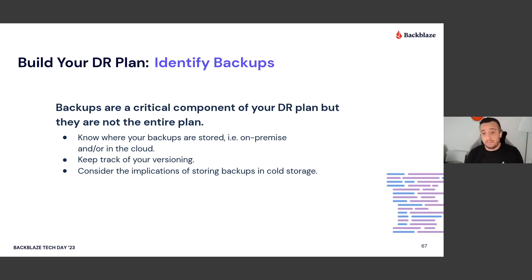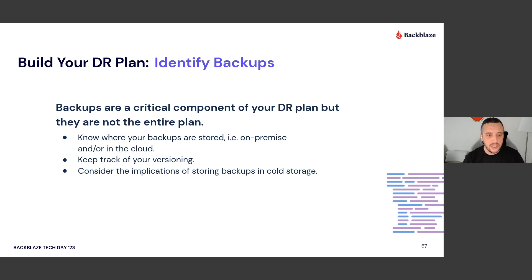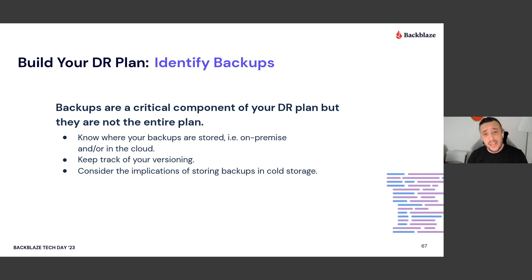Identifying your backups: backups are the critical component of any DR plan, but they're not the entire plan. You absolutely need a backup, but you're going to need more than that. You need to know where backups are stored — on-prem and/or in the cloud. The 3-2-1 is the general strategy, but we talk about the 3-2-1-1-0 strategy now. You should keep track of versioning and consider implications of storing backups in cold storage. Technologies like LTO are really a cold storage solution — not something you recover from very fast. If you have a faster RTO requirement and all your on-prem goes out, leaving only tape or LTO storage, that may not be the best solution.